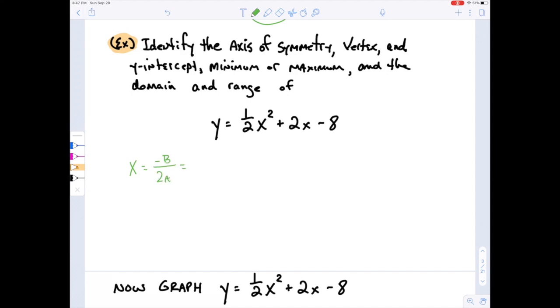So in this case, my b is 2, so negative 2 over 2 times a. And a is a half, so I have negative 2 over 1, which is negative 2. And that is the beginning of my vertex. So I'd probably write something like the axis of symmetry as x is negative 2 to keep everybody happy.